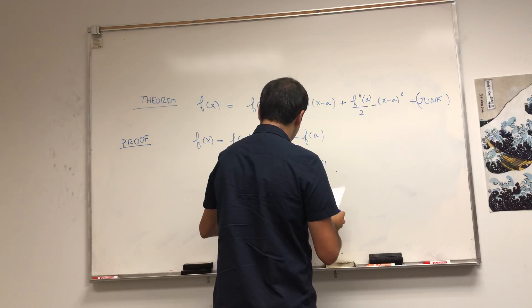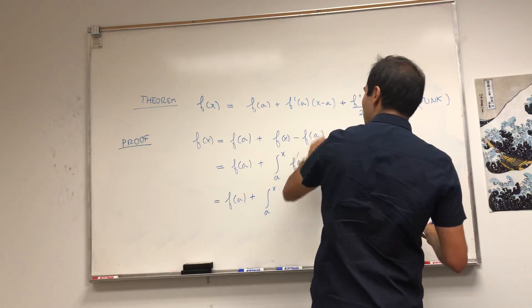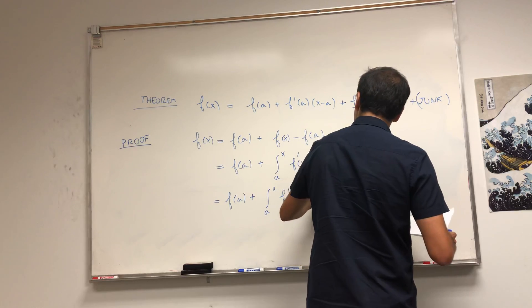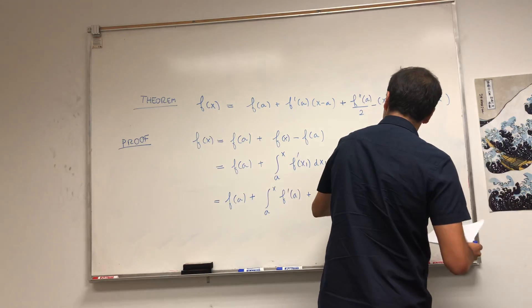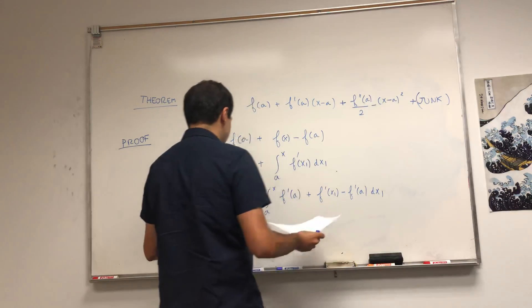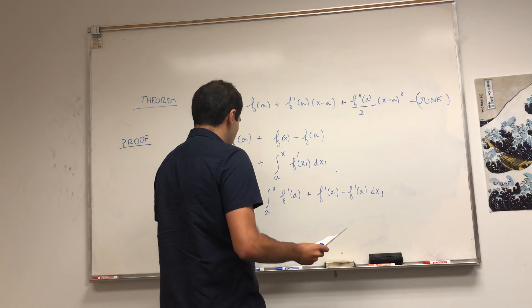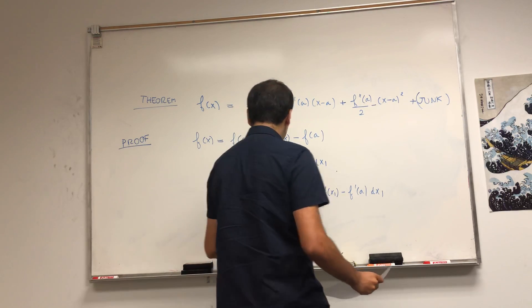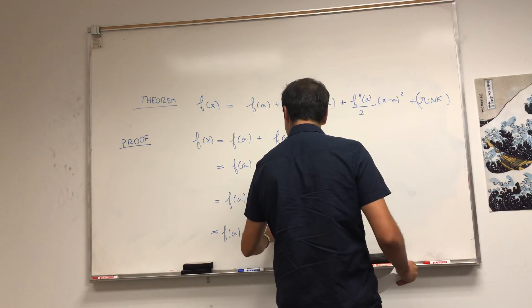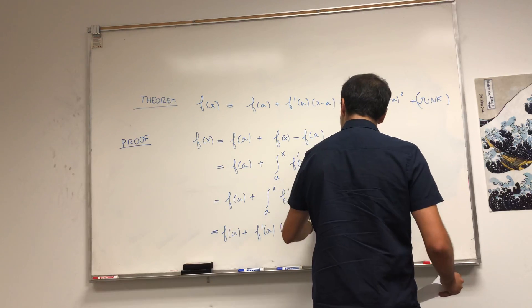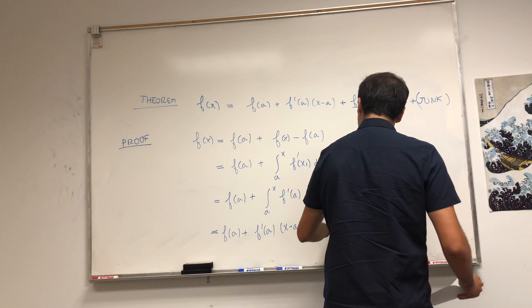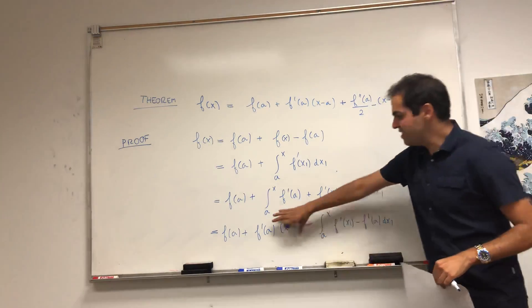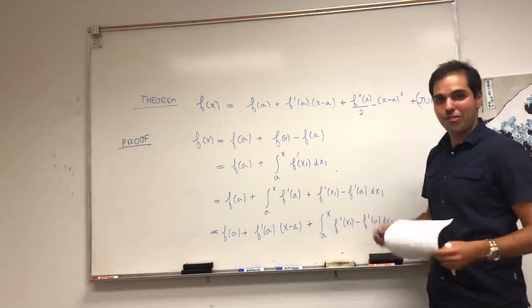Now let's continue. We have f(a) plus the integral from a to x, and we want to extract f'(a). So write f'(x₁) as f'(a) plus [f'(x₁) minus f'(a)], then split it up. The f'(a) term comes out of the integral, and the integral of 1 from a to x is just (x minus a). So you have f(a) plus f'(a)(x minus a) plus the integral from a to x of [f'(x₁) minus f'(a)] dx₁ — that's the second term of Taylor's formula.